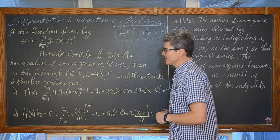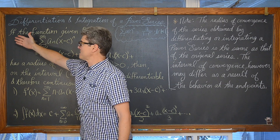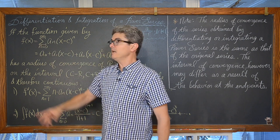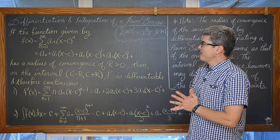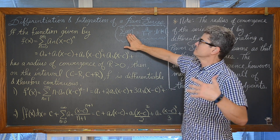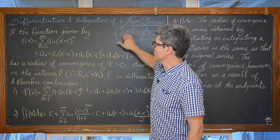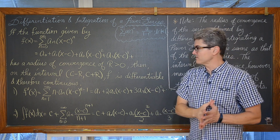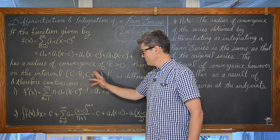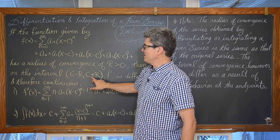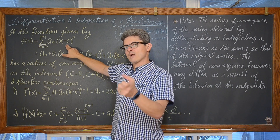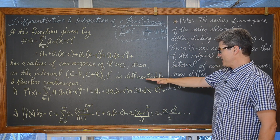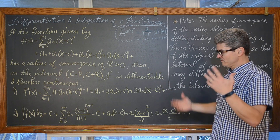We have a couple of guidelines here that we are going to look at. If the function given by f of x is equal to the summation where n starts at zero and goes to infinity of a sub n times x minus c to the n power — you can see how that is basically our old geometric series from pre-calculus — only we have that any given center there of x minus c has a radius of convergence of r greater than zero. Then on the interval from c minus r to c plus r, that x value of c for which we are creating a series around, we could use as a polynomial to estimate the value of f of x.